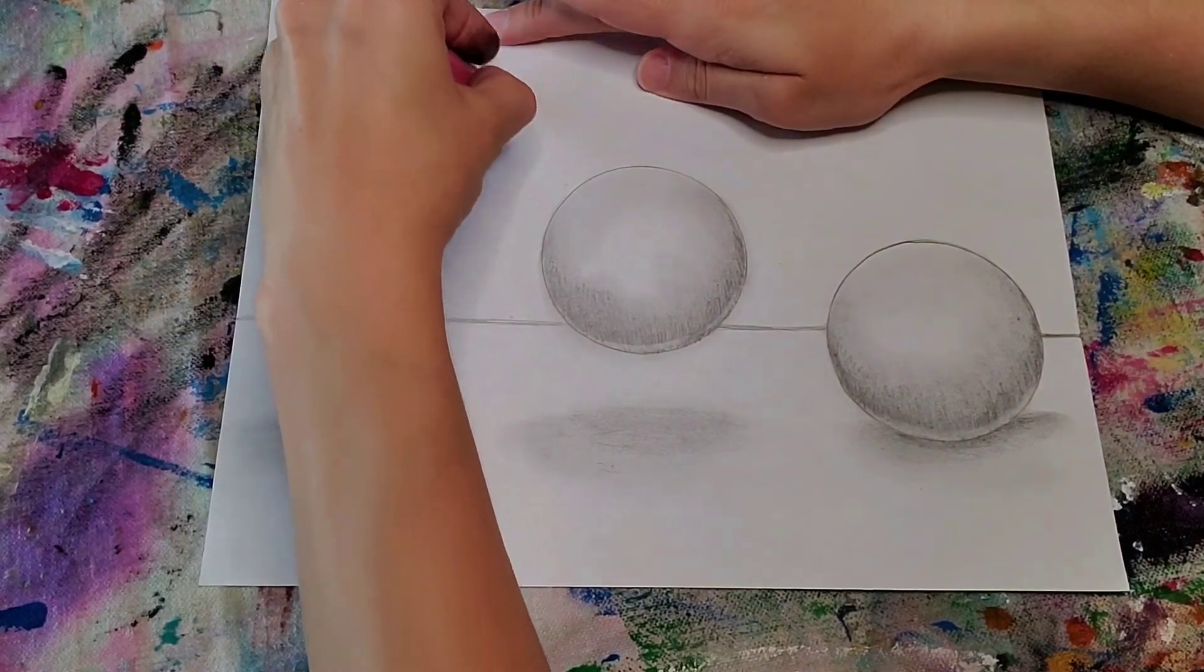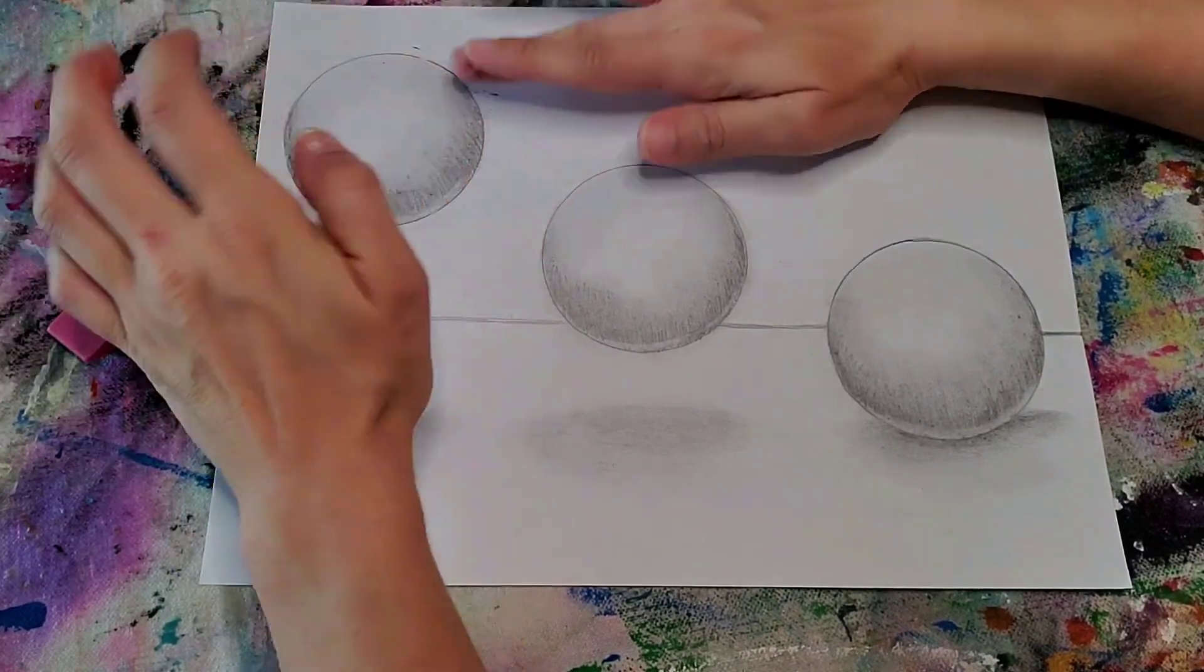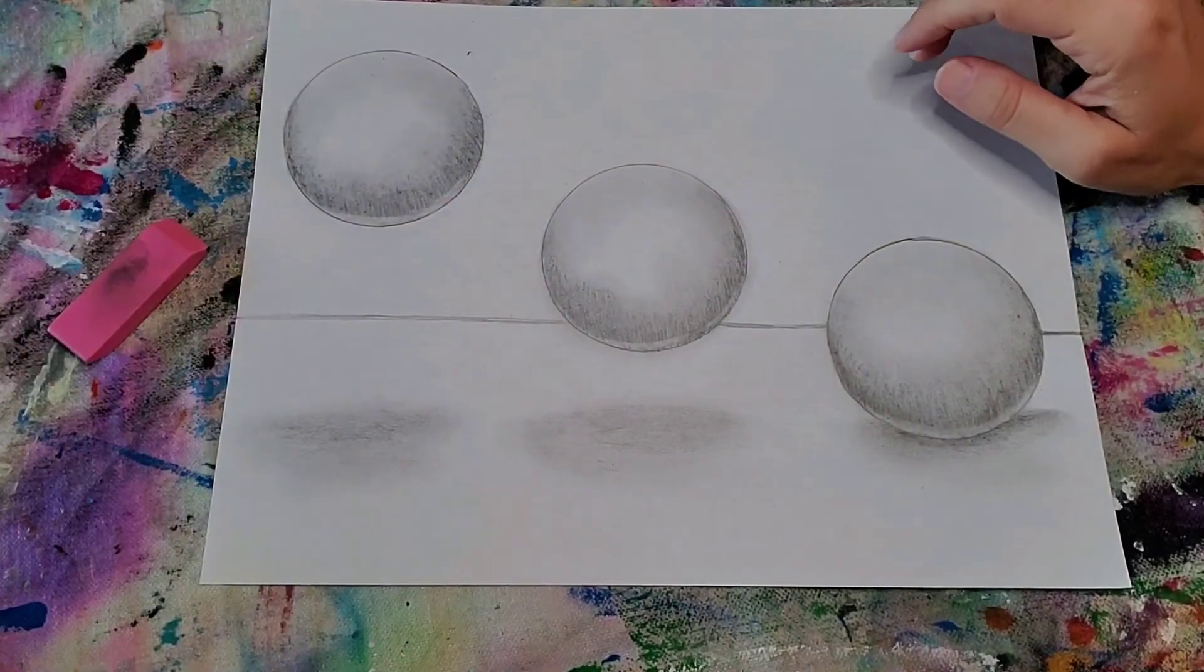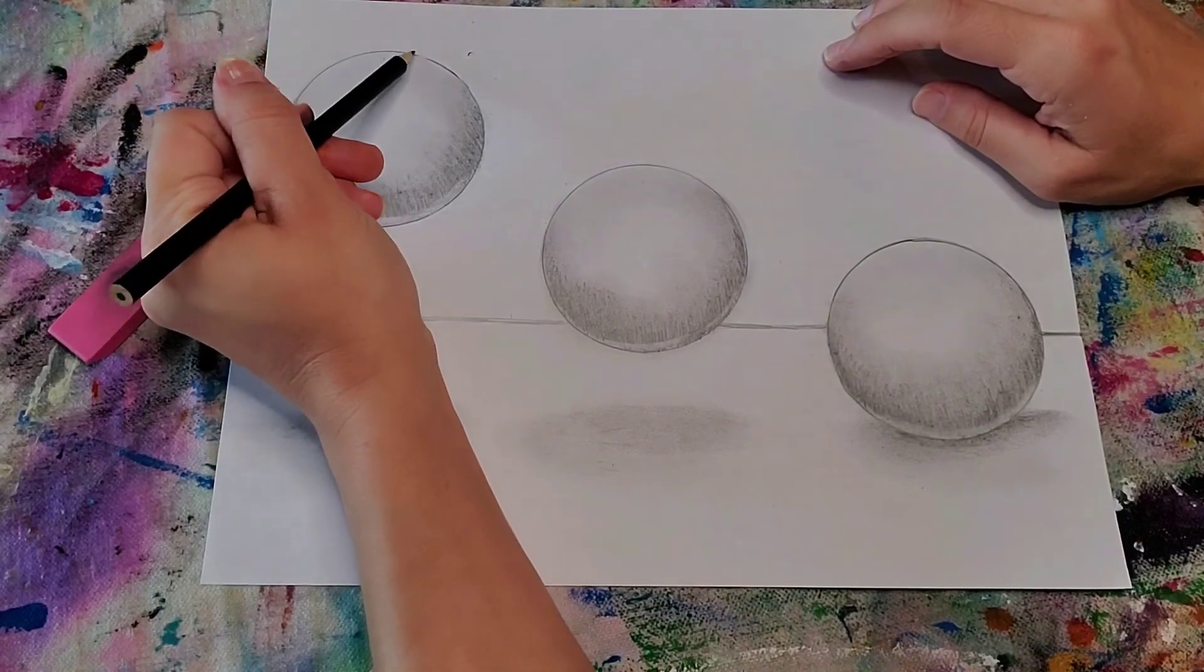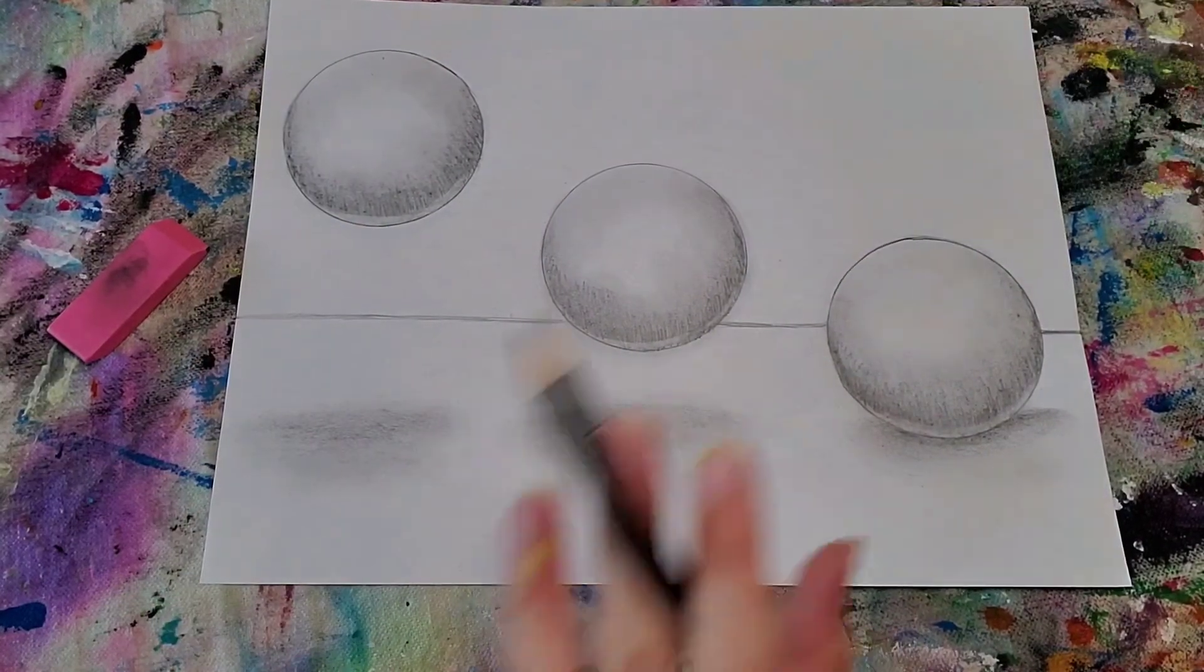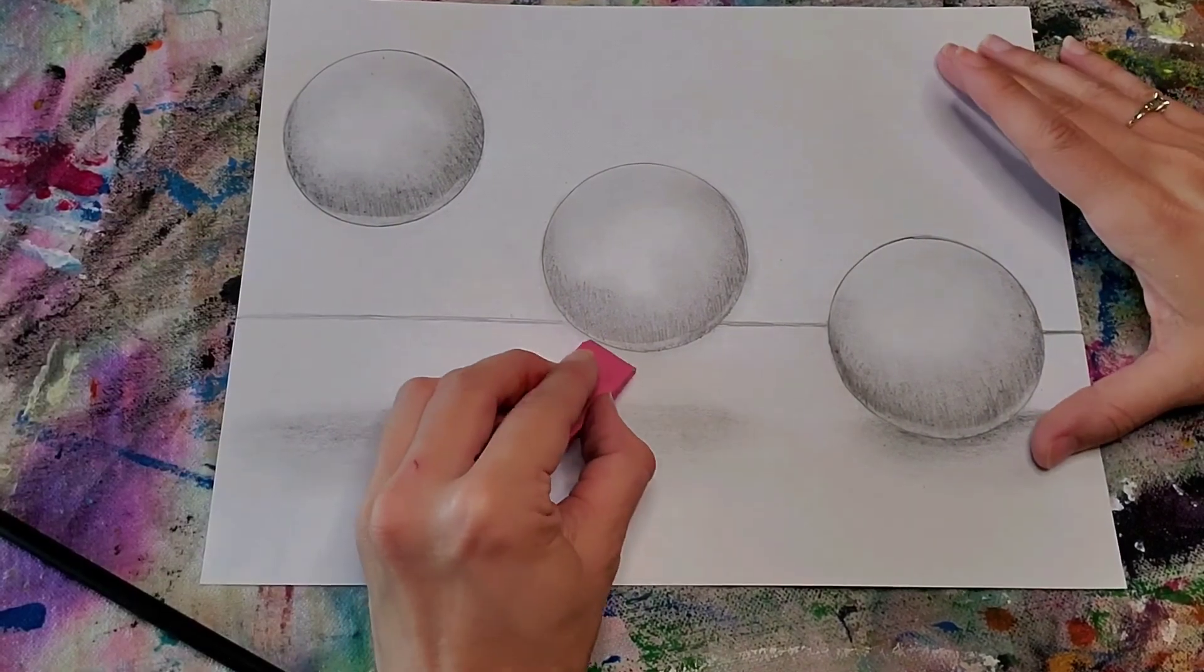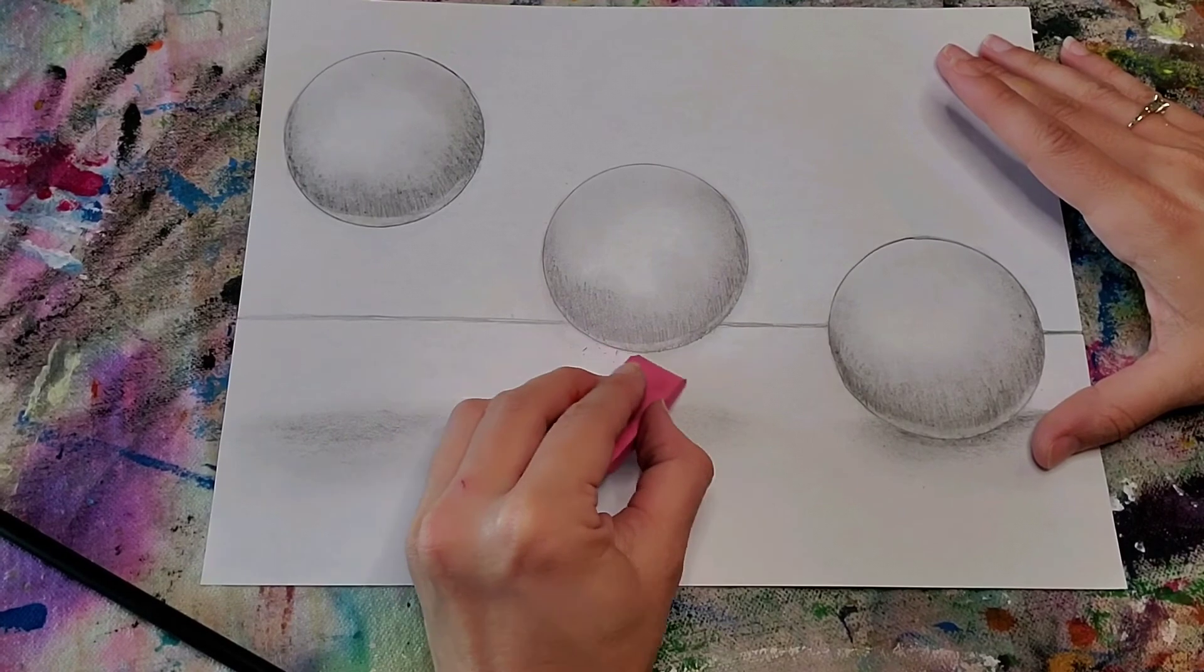And then just go ahead and take a look at your paper. See if anywhere else needs a little erasing or a little more blending. And then after you clean it up wherever it needs erasing, you are all finished.